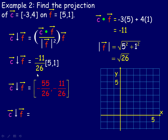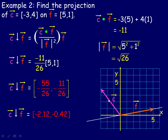Converting to decimals: x ≈ −2.12 and y ≈ −0.42. On the graph, f is the vector (5, 1) and c is the vector (−3, 4). Projecting c onto f by dropping a perpendicular gives a projection vector where the x-coordinate is just past −2 and the y-coordinate is about −0.42 down — this agrees with the computed components.